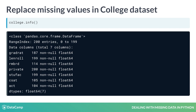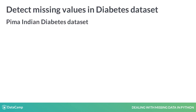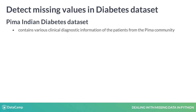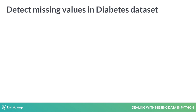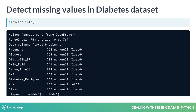Now let's consider another data set to detect hidden missing values. We will use the Pima Indians Diabetes data set, which contains various clinical diagnostic information of the patients from the Pima community. While loading the data set, we can observe NaN values for missing data when you print the head of the DataFrame. As before, let's print the info() of the diabetes DataFrame — they are all float or int type as expected.